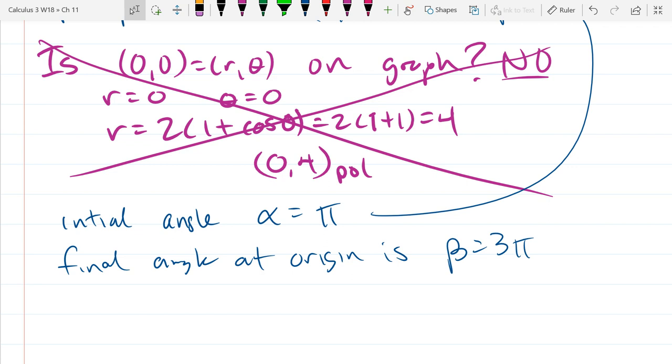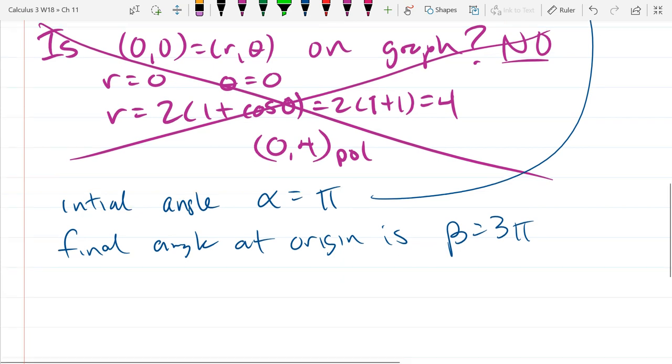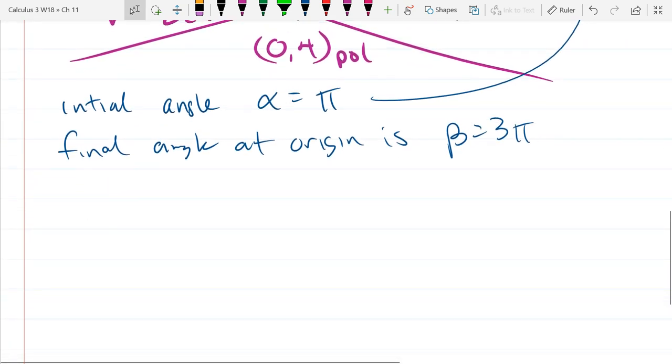So initial angle α equals π. We got that right above. So our final angle at the origin is 3π. So we'll come back to the origin at 3π. Now it's tricky without a graph to know if we're going clockwise or counterclockwise around. If we're going one direction, remember the area will be positive. If we go the other direction, the area will be negative. So depending on the way this is oriented, we might get a negative area. However, we can still find the area.